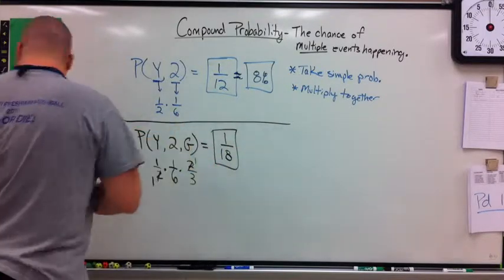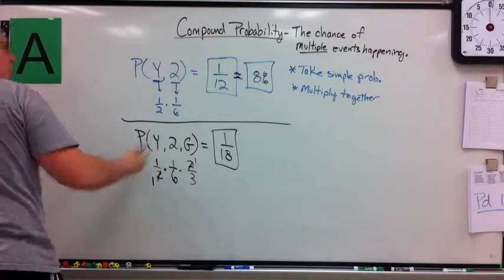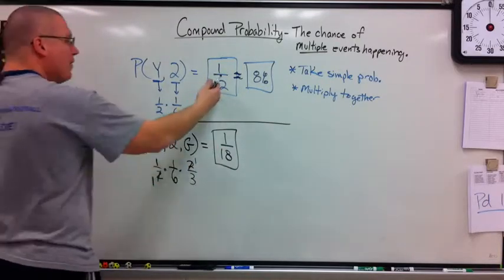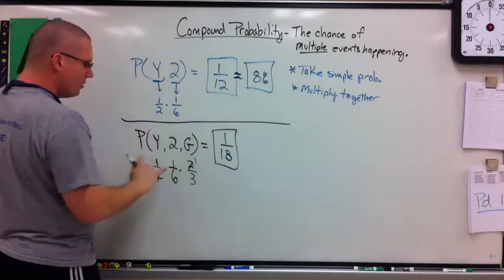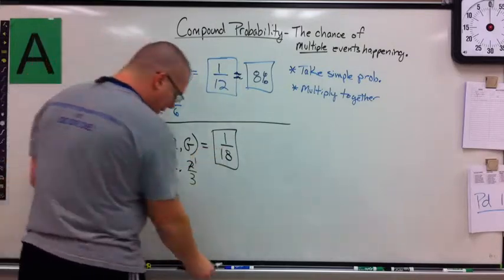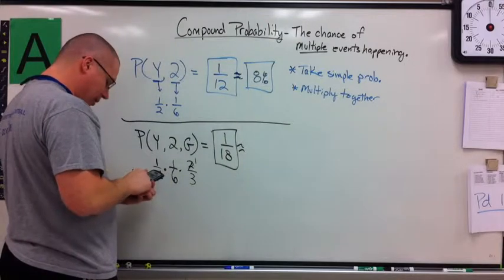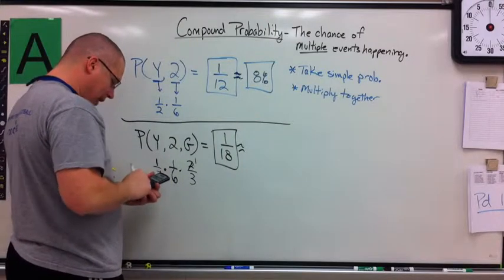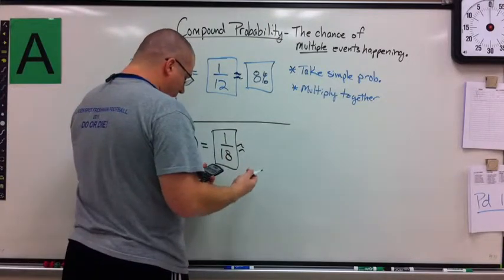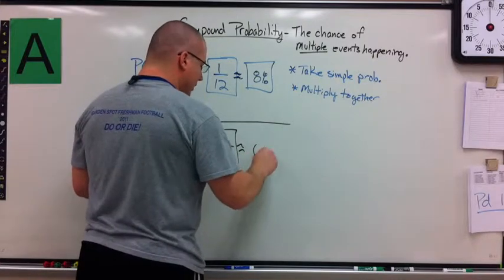So did my chances get better or worse? Hopefully you noticed they got worse. One out of every 12 should have won the two events. Three events, one out of 18. And my percent should drop from 8%. One divided by 18 is 5.5 repeating percent, so roughly 6%.